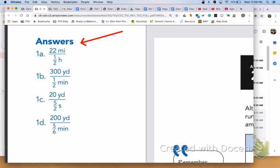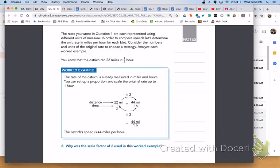For number 1, letter A, the rate for the ostrich is 22 miles to half an hour. Letter B, the roadrunner, 300 yards to half a minute. Letter C, the quail, 20 yards to 5 halves or 2 and a half seconds. And letter D, the pheasant, 200 yards to 5 sixths of a minute.